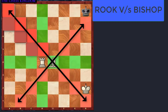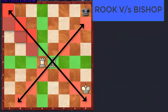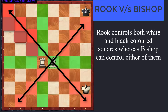Now you all must be thinking: if a Rook controls 14 squares and is assigned 5 points, and the Bishop on the other hand controls 13 squares — that is just 1 square less — then why is its importance only 3 points? Don't you think it is less? But the answer is no. The reason is very simple. Though the Rook controls only 1 square more than the Bishop, it controls both the white as well as the black colored squares, whereas the Bishop can control either of the colors — either white or black.